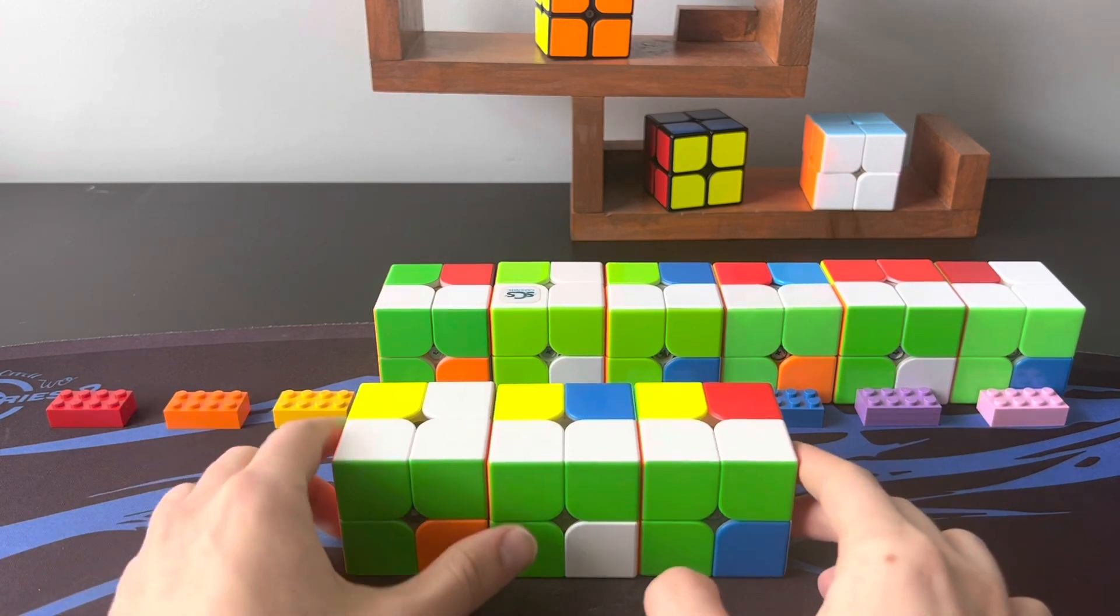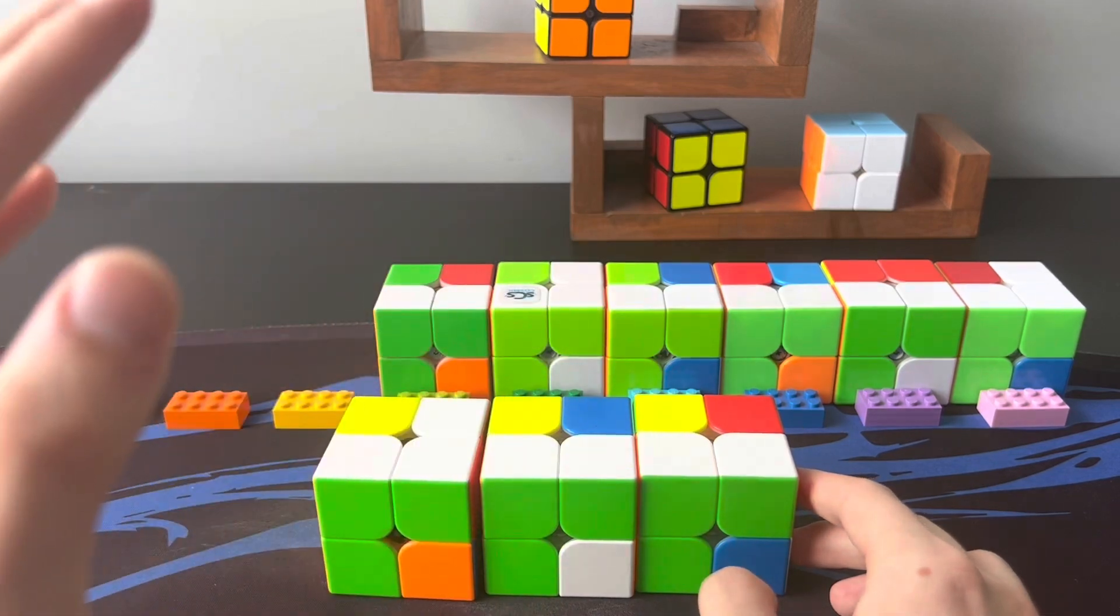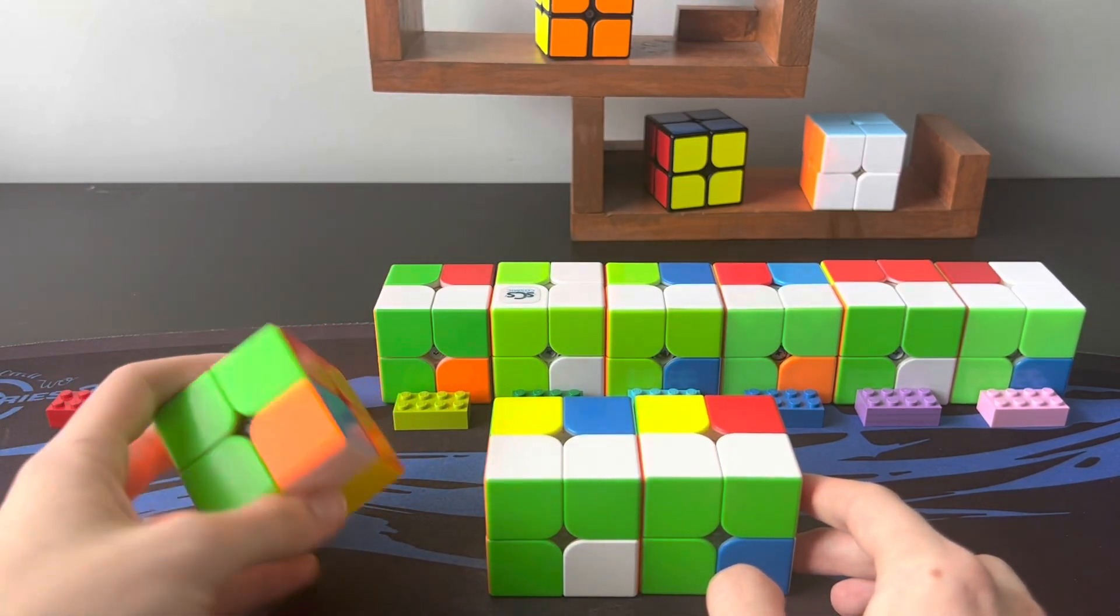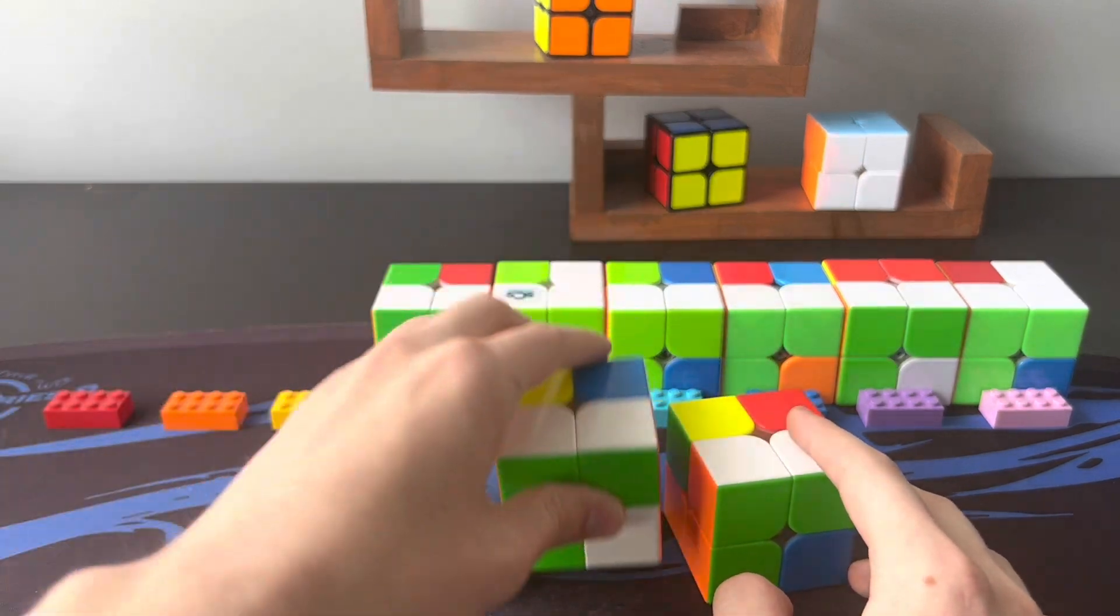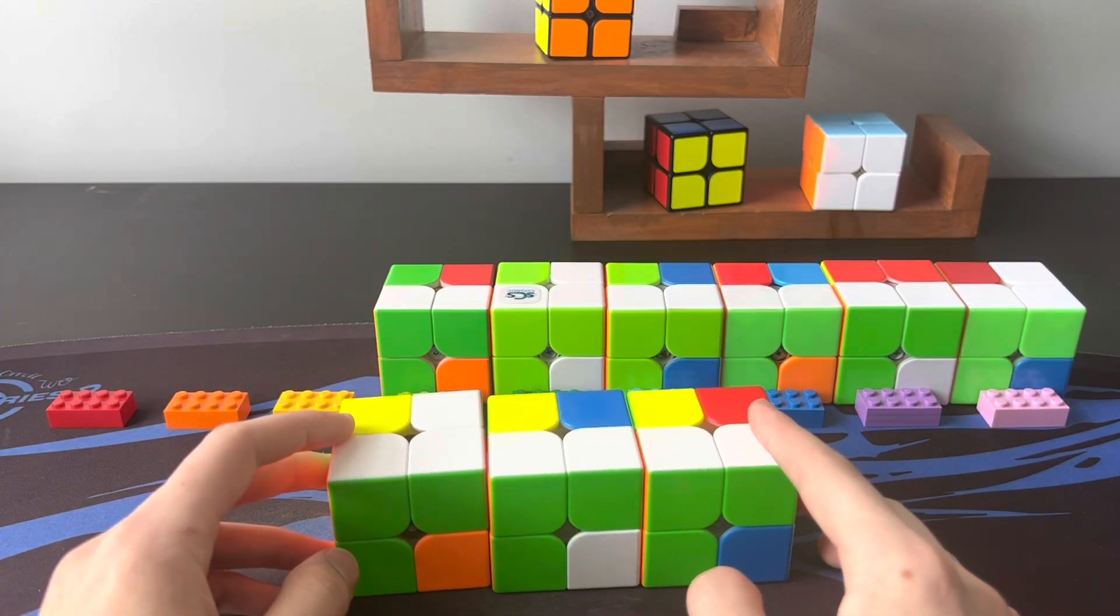It's also going to be beneficial knowing all three of these at once, because whenever you have the corner facing up like this, you know that you know the case, rather than also having to check the orientation of the bottom piece here and figuring out whether or not you know that case, because that's going to take a lot of time sometimes during inspection.